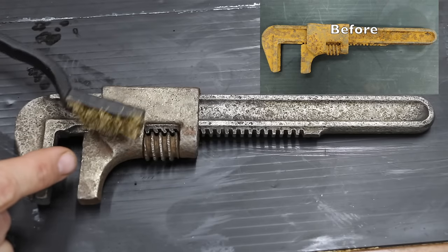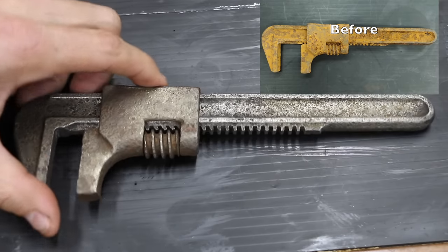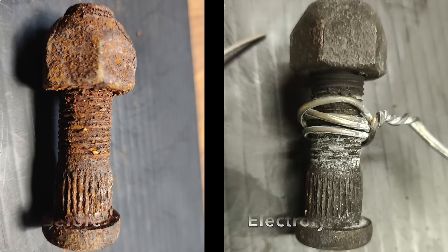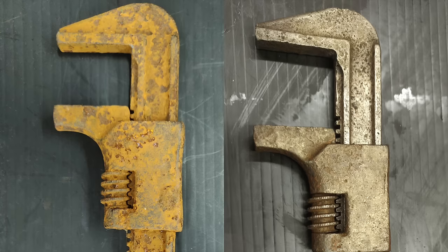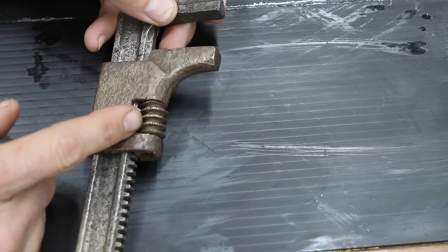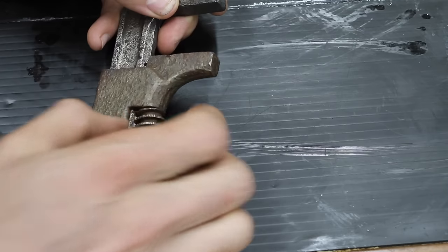So I used this copper brush to scrub down the wrench, and all I can say is, wow, electrolysis did a great job. This wrench looks incredible. So a little bit of effort and a little bit of Seafoam degreaser, I was able to get this wrench unseized as well, and now it moves freely.